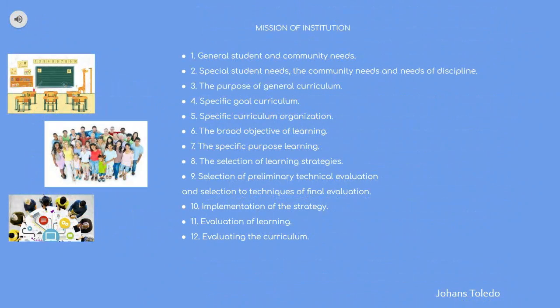I refer to the 12 facets of the Oliva model as the 'mission of institution' because they represent a step-by-step guide for developing the curriculum. They cover: general student and community needs, special student needs, community and discipline, the purpose of the general curriculum, specific curriculum goals, curricular organization, broad learning objectives, specific learning purposes, selection of learning strategies, selection of preliminary evaluation techniques, selection of final evaluation techniques, implementation of strategies, evaluation of learning, and evaluating the curriculum. Every single facet interrelates with the others to explain how we develop, implement, and use the curriculum to develop skills and domains in students.